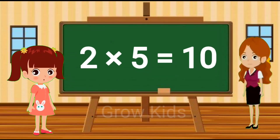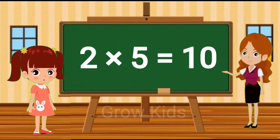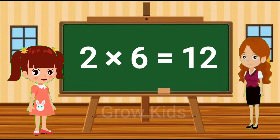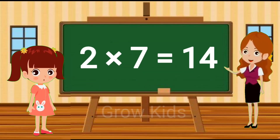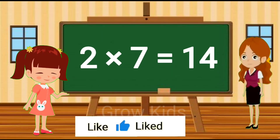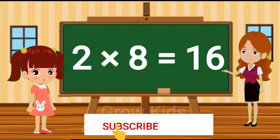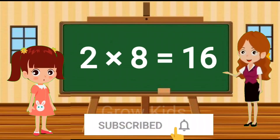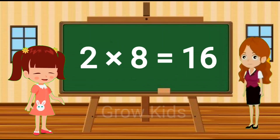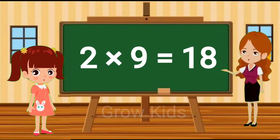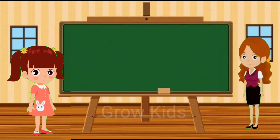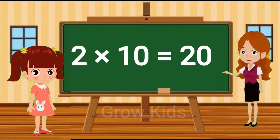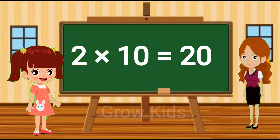Two fives are ten. Two sixes are twelve. Two sevens are fourteen. Two eights are sixteen. Two nines are eighteen. Two tens are twenty.